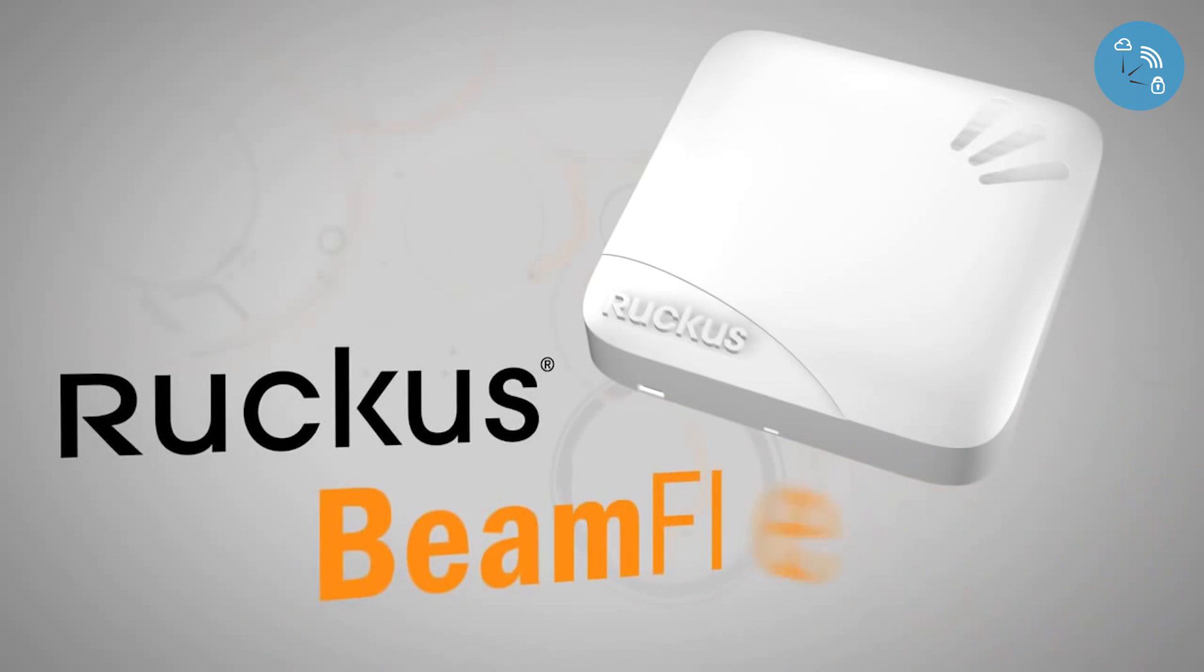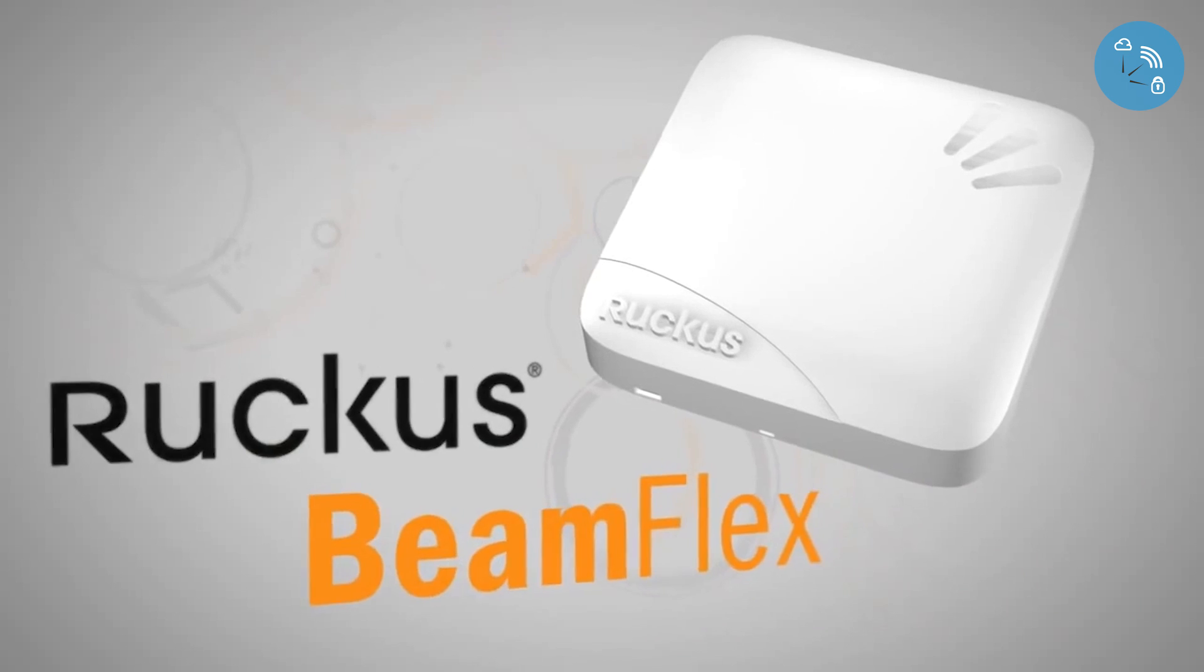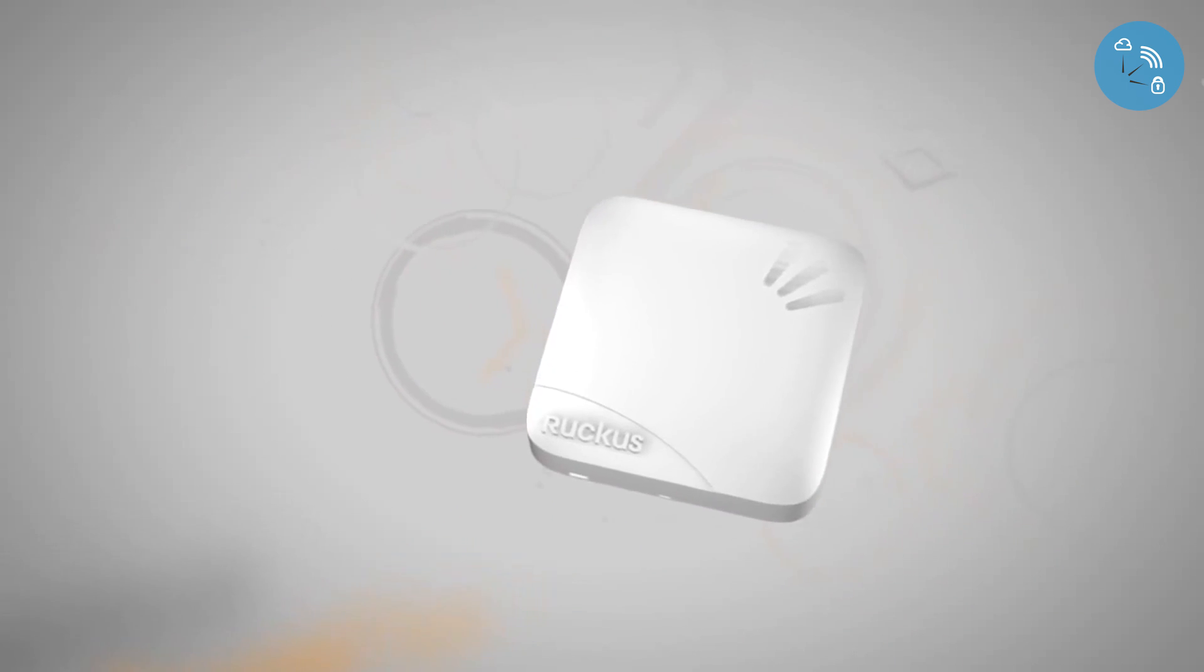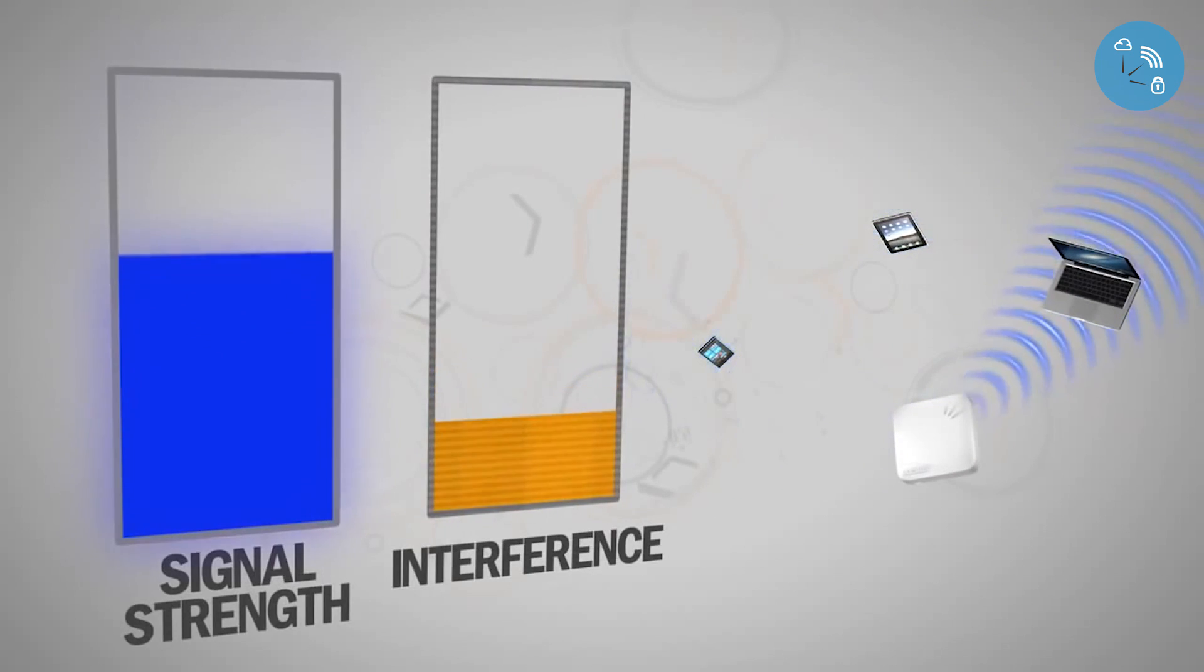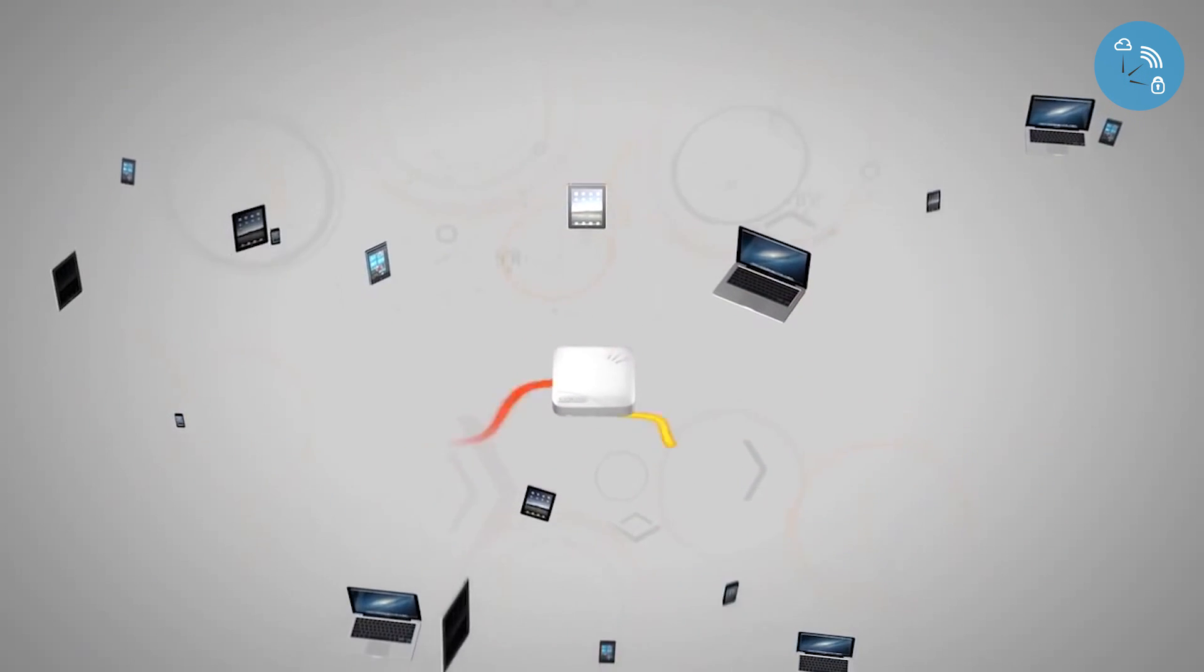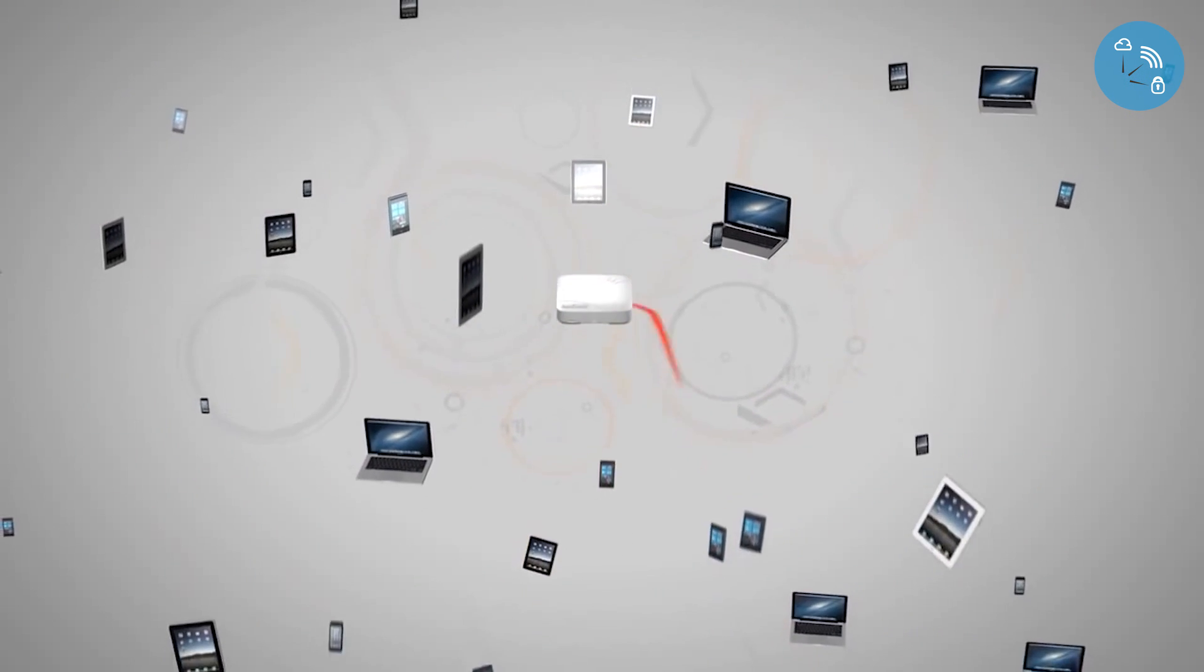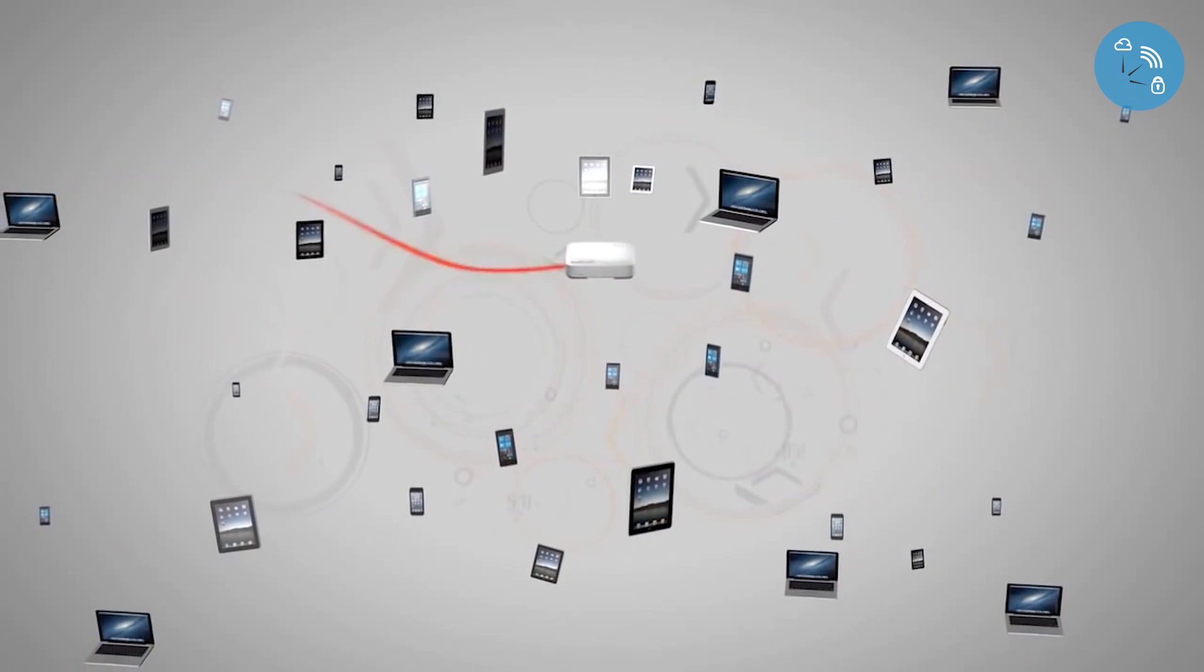Enter Ruckus BeamFlex. BeamFlex is the only adaptive Wi-Fi antenna technology that focuses and controls Wi-Fi signals. By increasing signal and decreasing interference, Wi-Fi performance is improved dramatically. This means more efficient connections and more room for more users, giving them a better Wi-Fi experience.